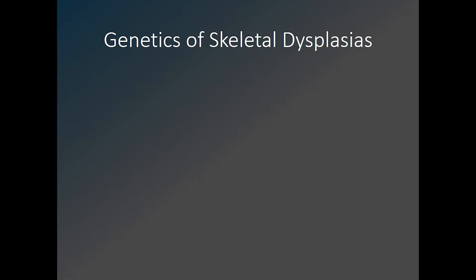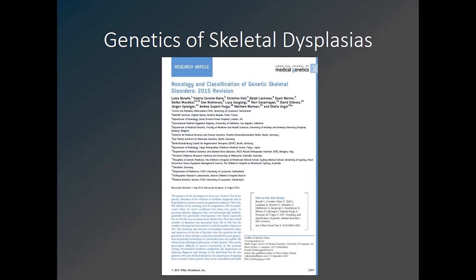A molecular diagnosis is possible for many of the skeletal dysplasias, with continual increase in the knowledge of the number of mutations and genetics of these conditions. Based on the nosology and classification of genetic skeletal disorders published by the American Journal of Medical Genetics, there are 436 skeletal dysplasias, which they have categorized into groups based on the genetics as well as the phenotypic abnormalities.